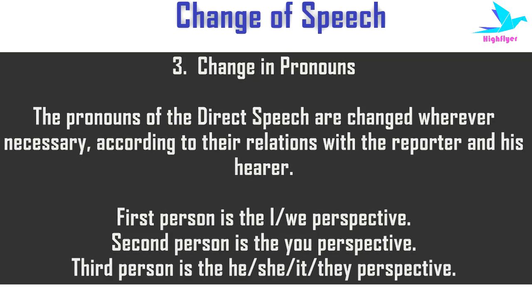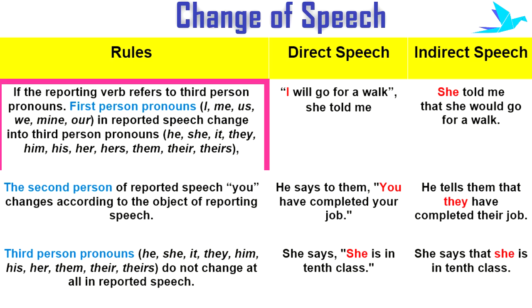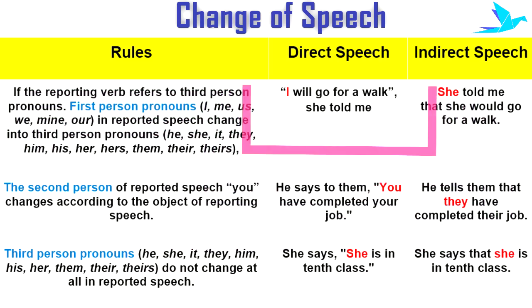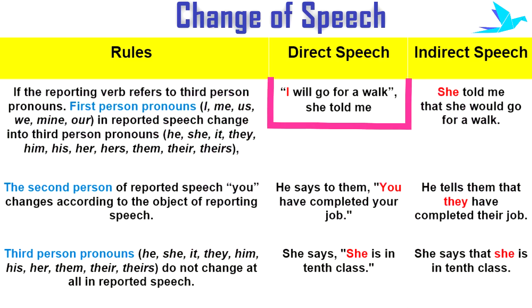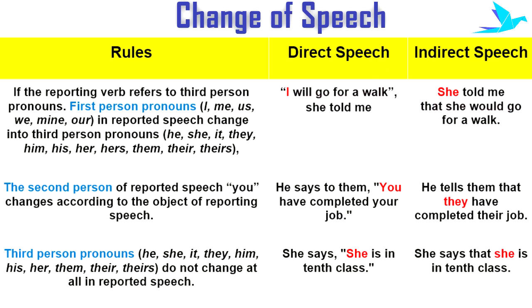When changing direct speech into indirect speech, pronouns change as follows. If the reporting verb refers to a third person, first person pronouns — I, me, us, we, mine, our — in the reported speech change into third person pronouns: he, she, it, they, him, his, her, hers, them, their, and theirs. For example: 'I will go for a walk,' she told me. In indirect speech: she told me that she would go for a walk. Here, 'I' is changed to 'she.'